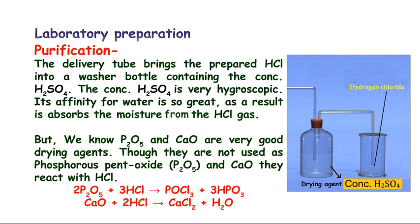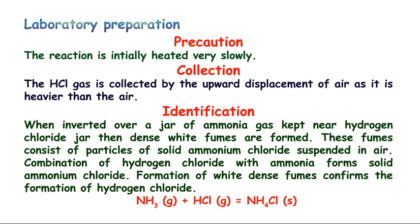After preparing HCl gas in the round bottom flask, the delivery tube carries it into a washer bottle full of concentrated H2SO4, where HCl is purified. H2SO4 is highly hygroscopic and absorbs moisture from HCl gas. We do not use phosphorous pentoxide or calcium oxide as drying agents because they react with HCl, and the reactions listed show we would not recover HCl.